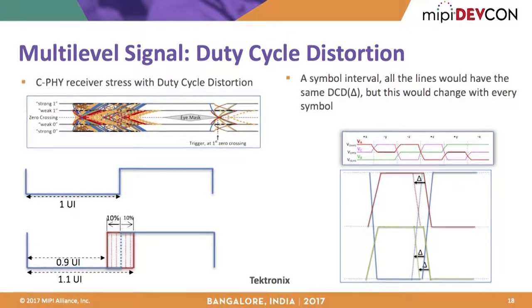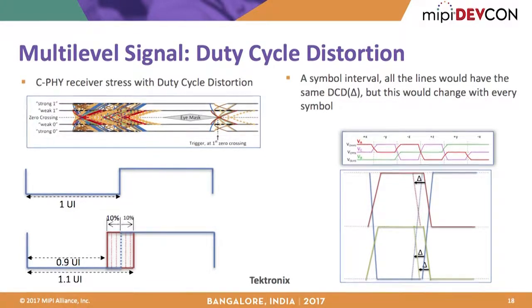While the DCD definition is well established for NRZ signaling, its application to C-PHY led to different interpretations initially. The picture defines DCD for a three-wire signal where the duty cycle change delta is constant for a given symbol across all three lines A, B, and C. Multiple synthesis approaches exist — one is to deskew lines A, B, and C; another is the more traditional method of changing the duty cycle directly.